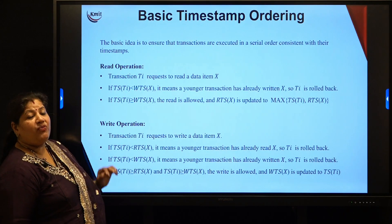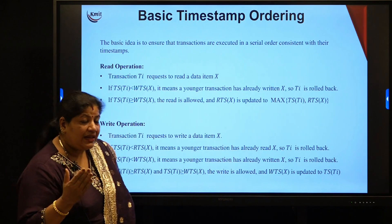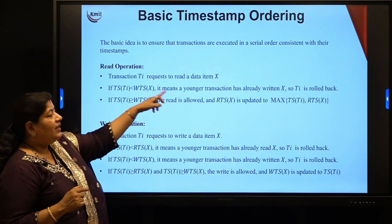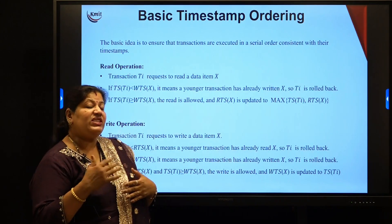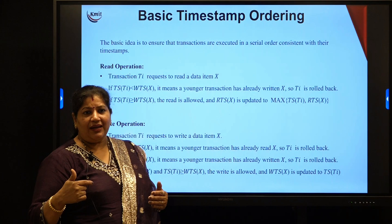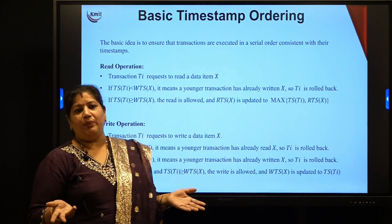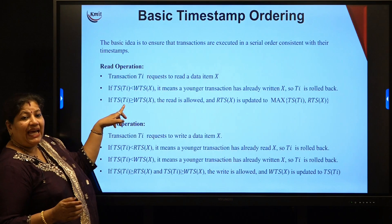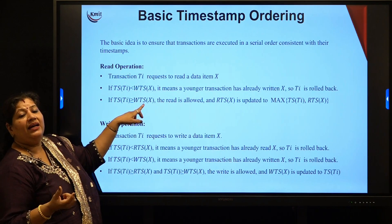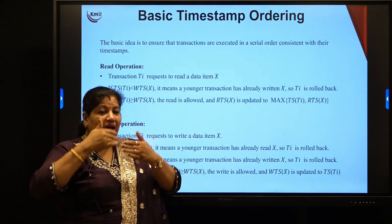If the write timestamp is greater than the timestamp of transaction Ti, it means a younger transaction — one that came after Ti — has already written x. So this would be out of serial order because a later transaction has already written, meaning Ti is late. It cannot be allowed to read, so it must roll back. Whereas if the timestamp of Ti requesting a read on x is greater than WTS(x), then the read is allowed, because an older transaction has already written.